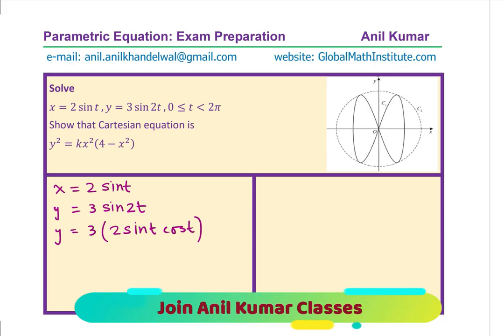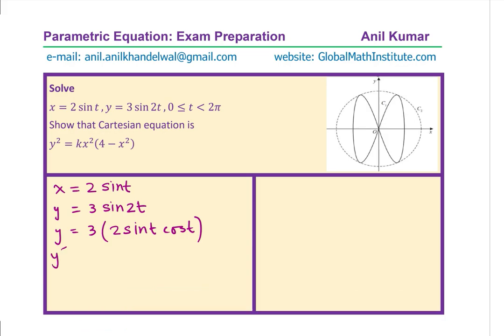We can apply the double angle formula to write y as 3 times 2 sin t cos t. Since we need y² on the left hand side, let me square this. When we square, we get y² equals to 9 and we get 4 sin² t cos² t.